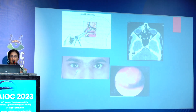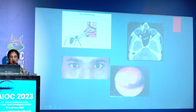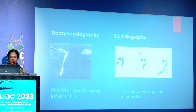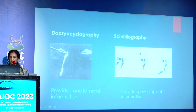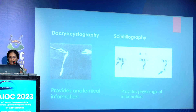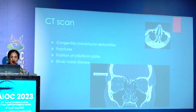Nasal endoscopy is useful to rule out nasal masses like polyps, scars, or nasal deviation. This patient came with occasional watering with blood-stained discharge and there was a soft mass; on nasal endoscopy a rhinosporidial mass was seen in the inferior meatus. Dacryocystography and scintigraphy are imaging techniques: dacryocystography provides anatomical information by inserting a catheter and injecting dye into the lacrimal system and taking radiographs — failure to reach the inferior meatus indicates obstruction. Scintigraphy is more physiological: radiolabeled tears are observed through a gamma camera. CT scan is used for bony abnormalities, craniofacial abnormalities, fractures, and sinus or nasal diseases.